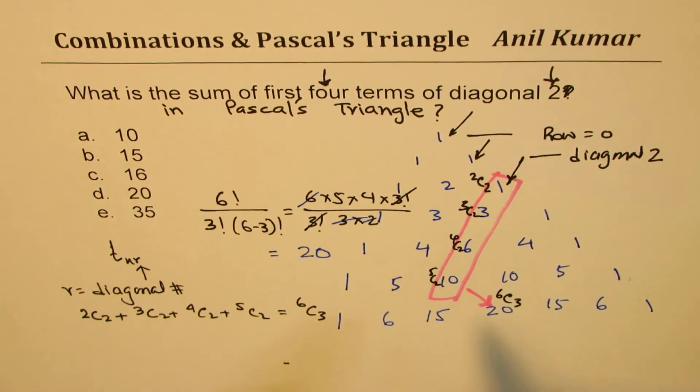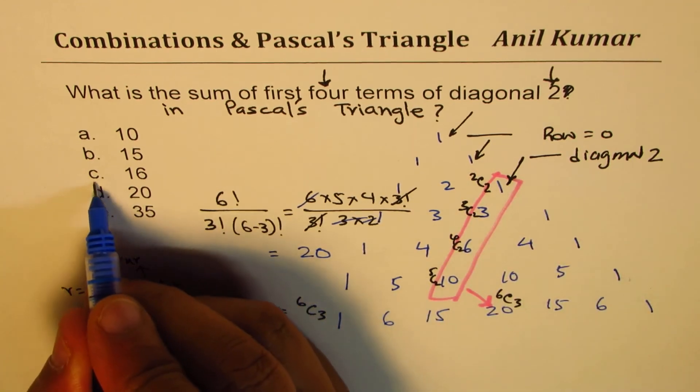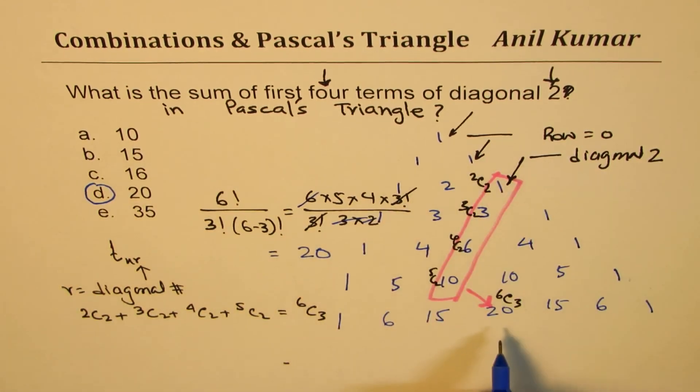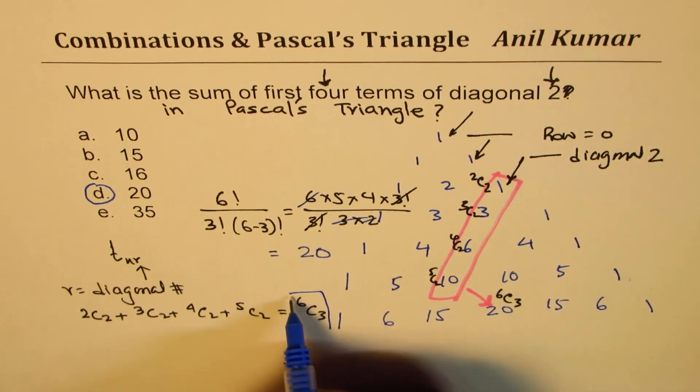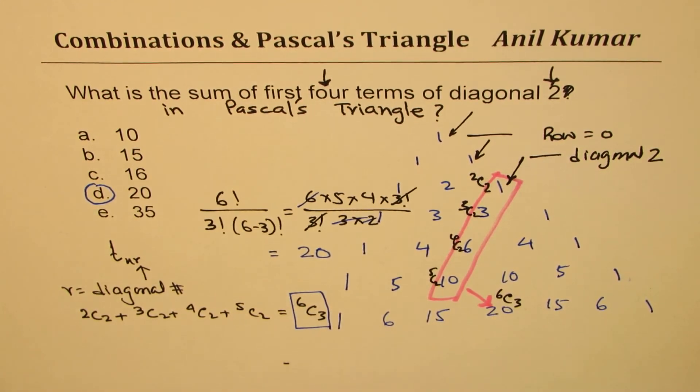Correct. You get the same answer, and you save all the time in making Pascal's triangle and figuring out that number 20, right? So the answer is 6C3, right? So the answer is 6C3.